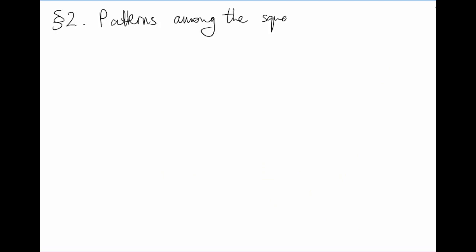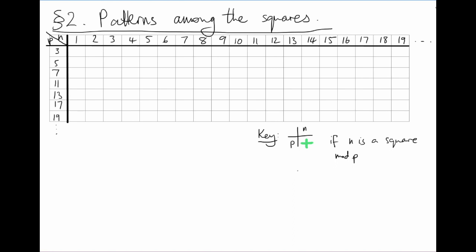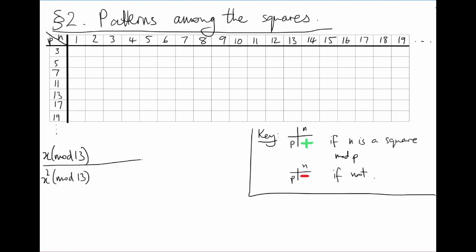Patterns among the squares. It's not quite clear where to start, so let's just begin by gathering some data on which numbers are squares mod p. I'm going to put positive integers n along the top, odd primes p down the left hand side, and fill in this table with a plus sign if n is a square mod p, and a minus sign if n is not a square mod p. You could use ticks and crosses, but this will be helpful later.